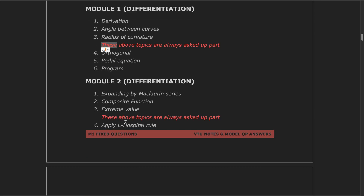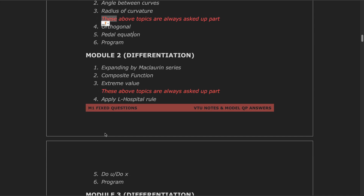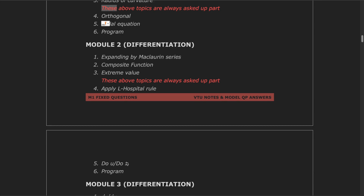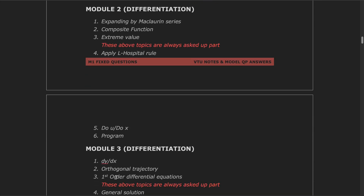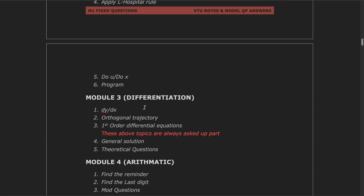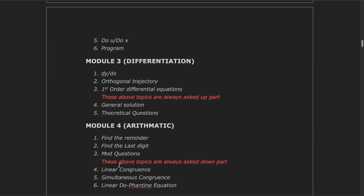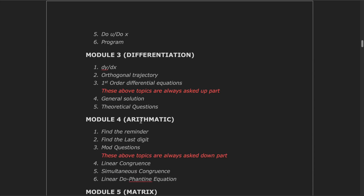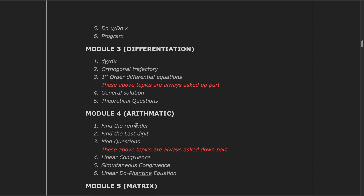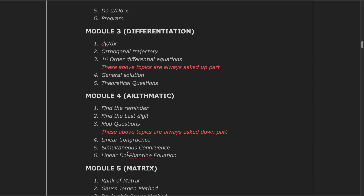In model 2, the first question is always about expanding by McLaren series, composite functions, and extreme value. The second question is always about applying L'Hospital rule, ∂u/∂x, and program. In model 3, which is also about differentiation, the first question is always about dy/dx, the second is orthogonal trajectory, the third is first-order differential equation, the fourth is general solution, and the fifth is theoretical questions.